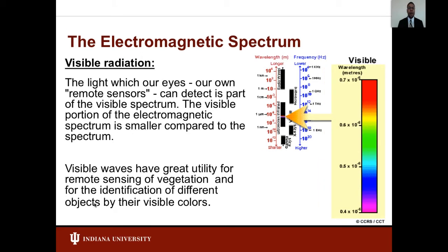The light our eyes detect is part of the visual spectrum. Blue, green, and red are the primary colors or wavelengths of the visual spectrum. No single primary color can be created from the other two, but all other colors can be formed by combining the primary colors in various proportions. Although we perceive sunlight as a uniform color, it is actually composed of various wavelengths of radiation, primarily the ultraviolet, visible, and infrared portions of the spectrum. The visible portion can be shown in its component colors when sunlight is passed through a prism, which bends light in differing amounts according to wavelength.